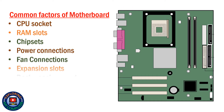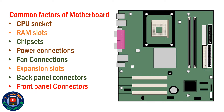Common factors of a motherboard include: CPU socket, RAM slots, chipsets, power connections, fan connections, expansion slots, back panel connectors, and front panel connectors.